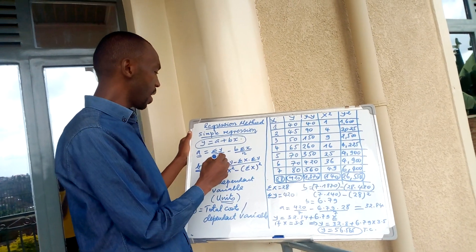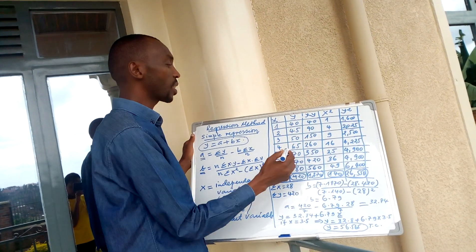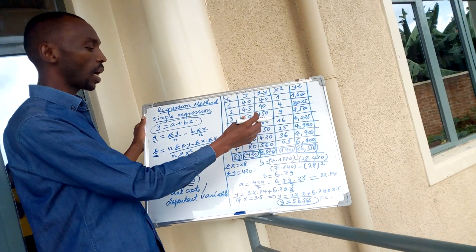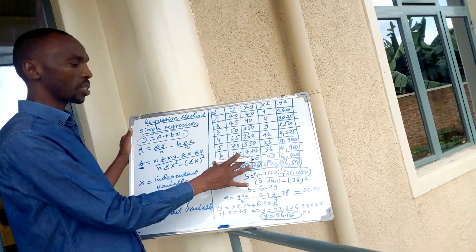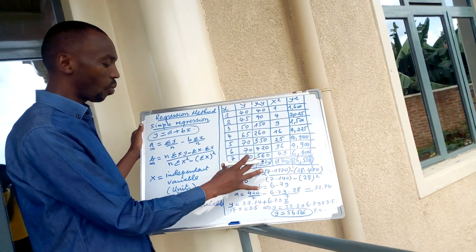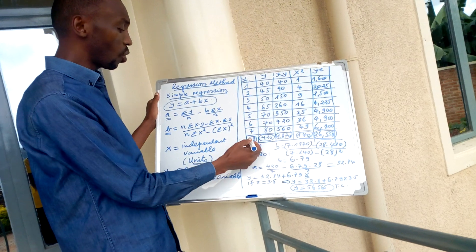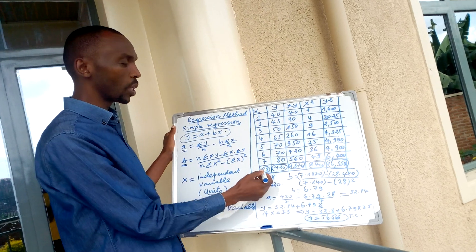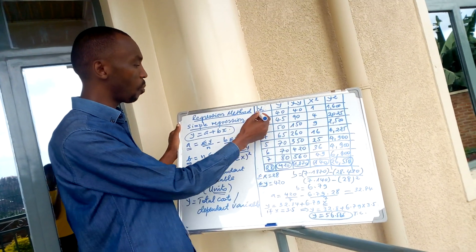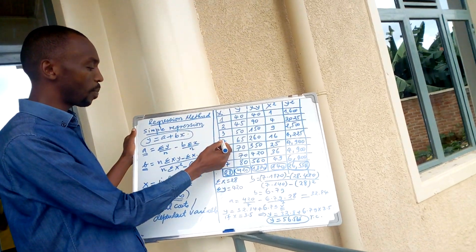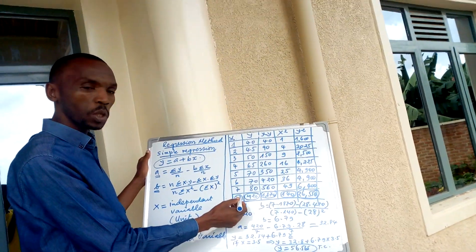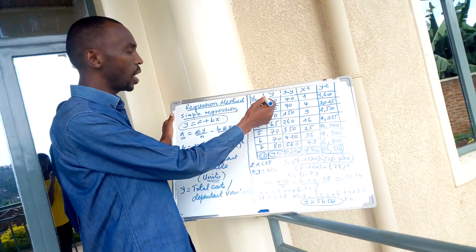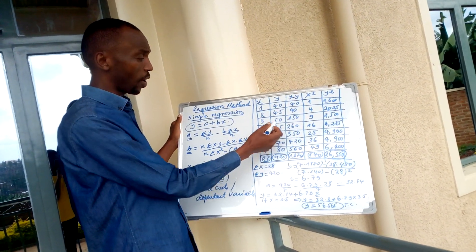In this table, to calculate a and b, we need columns for x times y, x squared, and y squared. The summation of x is 28 — that is the total units for the seven years of observation. Taking 1 plus 2 plus 3 plus 4 plus 5 plus 6 plus 7 gives 28. These are in hundreds. The summation of y, representing total costs, is 420.